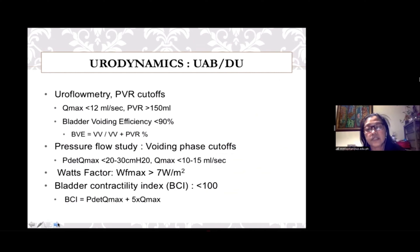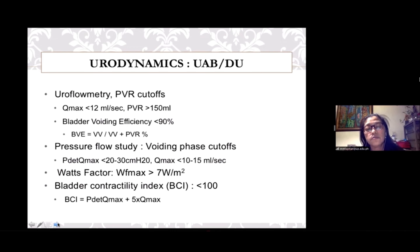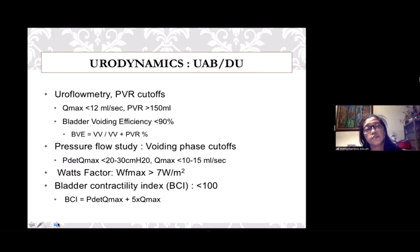The more commonly used urodynamic criteria for detrusor underactivity is a combination of a Qmax of less than 12 mL/s and a post-void residual volume of more than 150 mL. A bladder voiding efficiency value of less than 90% using the formula shown in this slide could also signal possible detrusor underactivity, although a low BVE value may also be seen in bladder outlet obstruction. When performing a pressure flow study, a combination of PdetQmax of less than 20–30 cmH₂O and a low Qmax of less than 10–15 mL/s has been used as diagnostic criteria for detrusor underactivity.